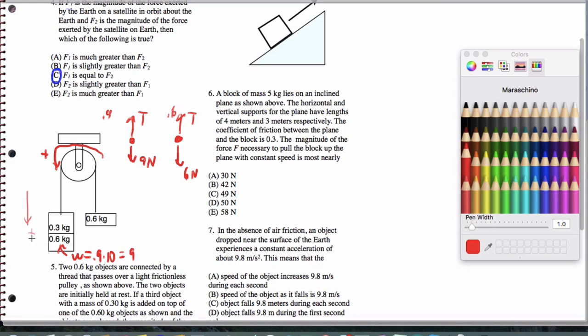I'm calling this direction positive, which makes this direction positive for the 0.6. So when I look at my equations for the 0.9, I'm going to get 9 minus t equals 0.9 times a. And for the 6 kilograms, it's going to actually end up being t minus 6 equals 0.6 a. Now when I put these two equations together, I'm actually going to add them. That'll eliminate the tension. That's actually going to give me 3 equals 1.5 times a when I combine these equations. So a ends up being 2 meters per second squared.